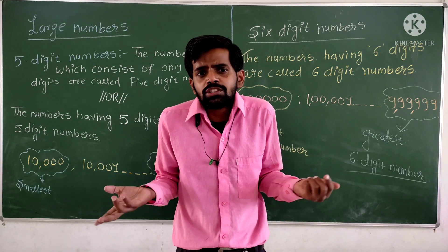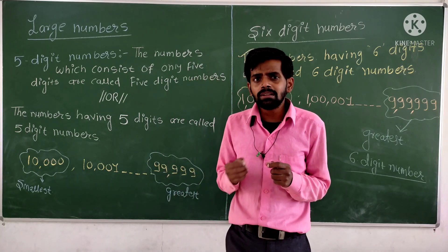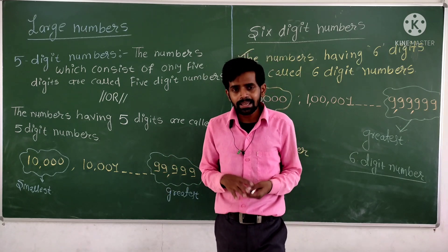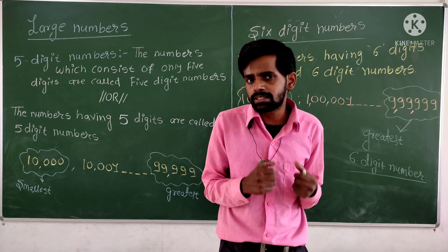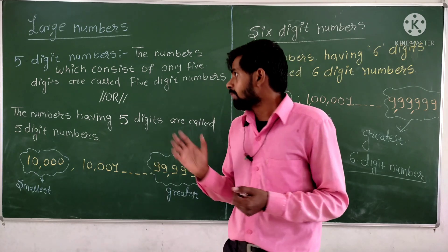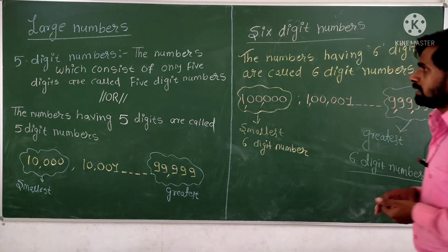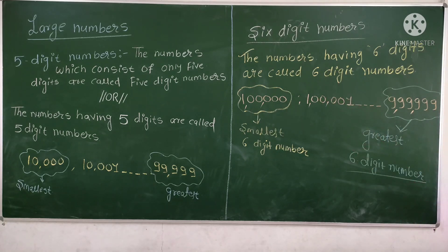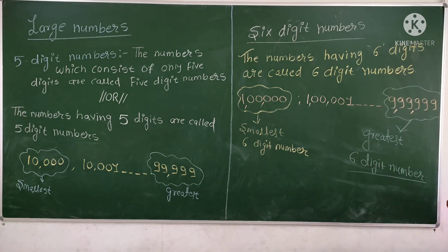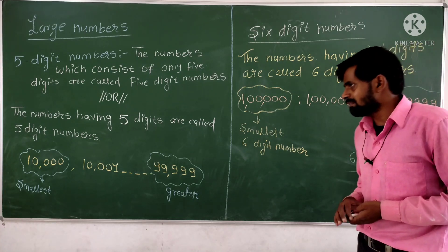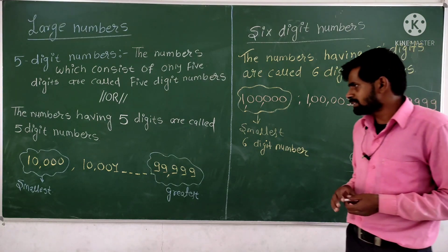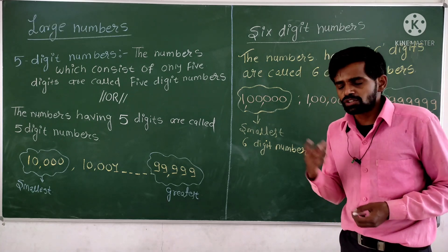Which numbers are five digit numbers? It is simple — the numbers having five digits are called five digit numbers. There are two definitions. The first one: the numbers which consist of only five digits are called five digit numbers. The second definition: numbers having only five digits, or a number having five digits, are called five digit numbers.